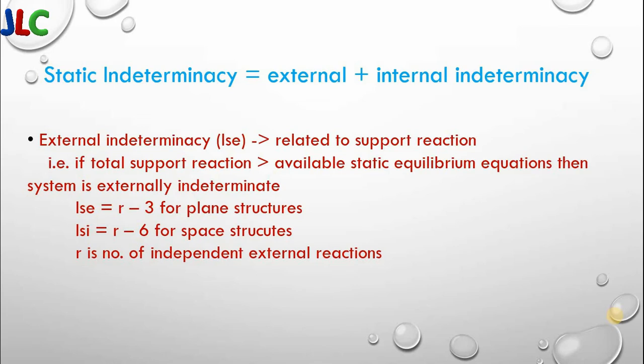We use r minus 3 for plane structure because 3 is the number of static equilibrium equations available: summation Fx equals 0, summation Fy equals 0, and summation moment equals 0. For space structure we have summation Fx, Fy, Fz equals 0 and moment about 3 axes equals 0, so r minus 6 for space structure.